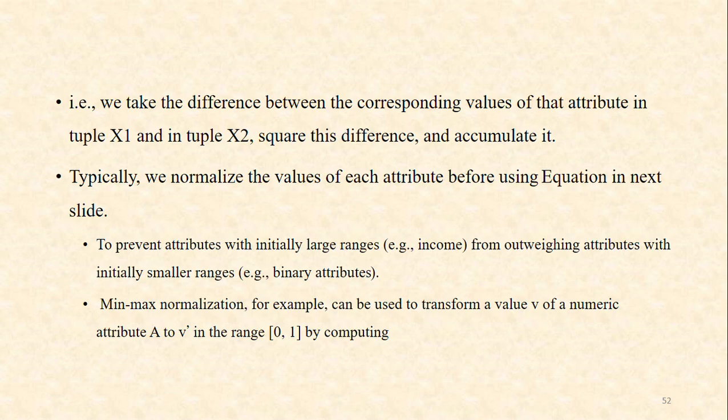We normalize the attributes to reduce the complexity of finding the k-nearest neighbors — that is, to prevent attributes with initially large ranges from outweighing attributes with initially small ranges. For example, consider the attribute income, which ranges from thousands to lakhs. To reduce the size of the range, we can use normalization techniques. There are several normalization techniques available.